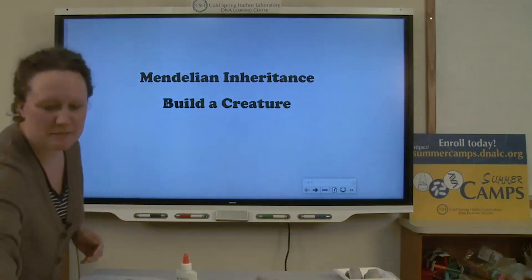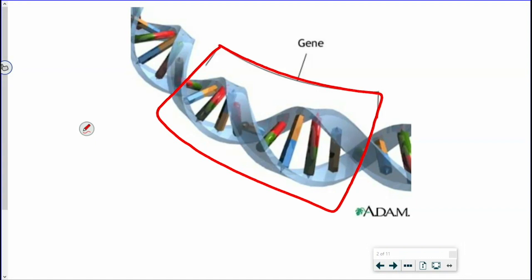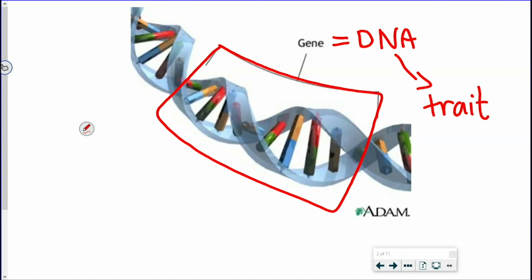Our story starts with genes. We're talking about heredity today, and a lot of people when they hear the word heredity think of the passage of genes from one generation to the next. A gene is a piece of DNA that contains the instructions that will ultimately determine a living thing's traits — your hair color, your eye color, freckles, dimples — all the things that make you you, all have something to do with your genes and other factors as well.